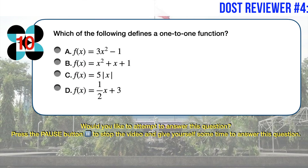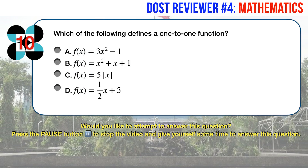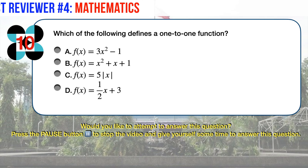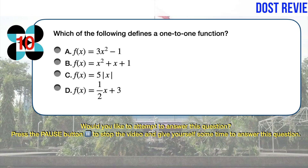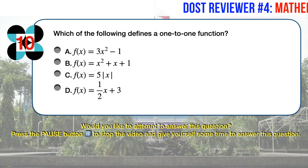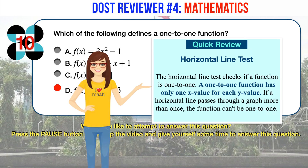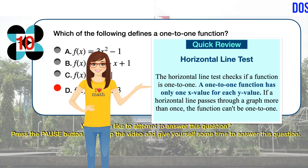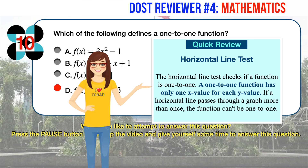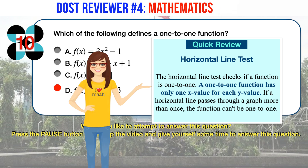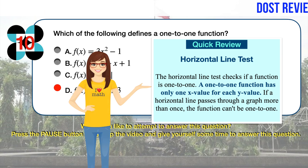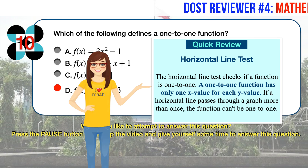Math question number 10. Which of the following defines a one-to-one function? Options: A. f(x) equals 3x squared minus 1; B. f(x) equals x squared plus x plus 1; C. f(x) equals 5 times the absolute value of x; D. f(x) equals one-half x plus 3. The correct answer is D. To determine if a function is one-to-one, use the horizontal line test: a one-to-one function has only one x-value for each y-value, and no horizontal line should pass through the graph more than once.